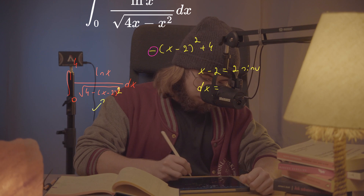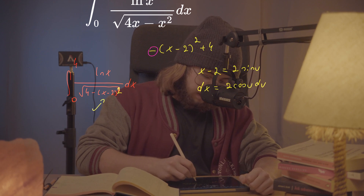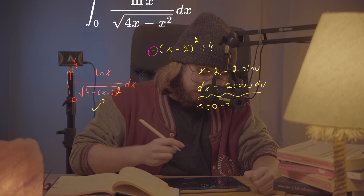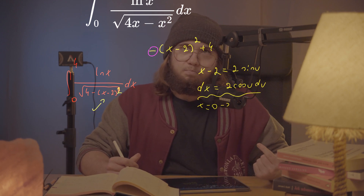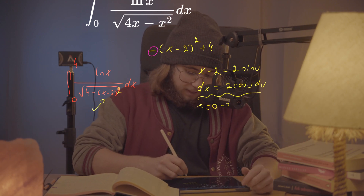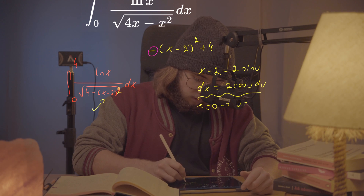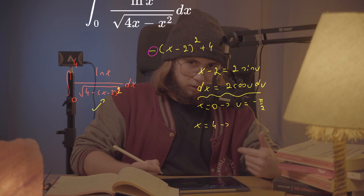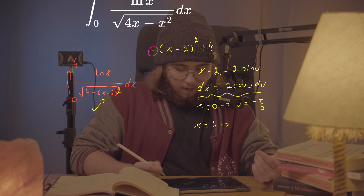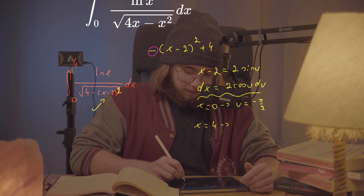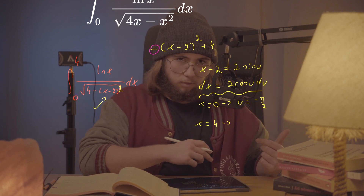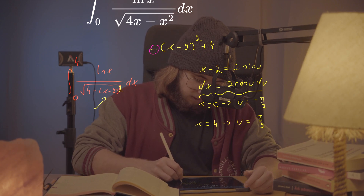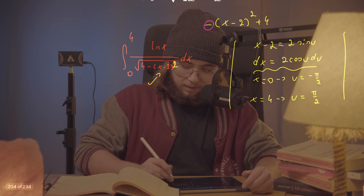That means dx equals 2 cosine of u du. As for the bounds of integration: whenever x equals 0, we need 2 sine of u equal to negative 2, so sine of u equals negative 1. I'll take negative pi over 2 for my lower bound. When x equals 4, we need 2 sine of u equal to 2, so sine of u equals 1, giving u equal to positive pi over 2. These are my new bounds.